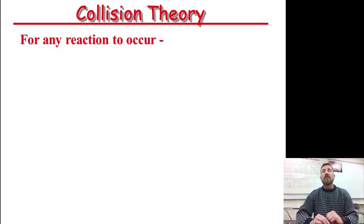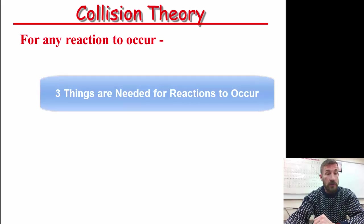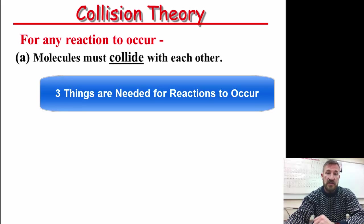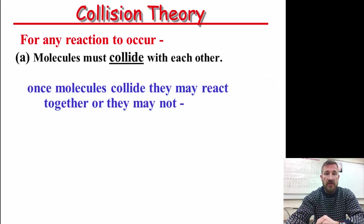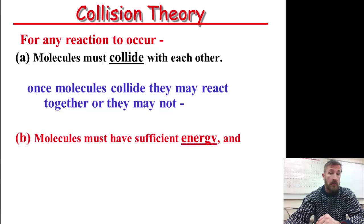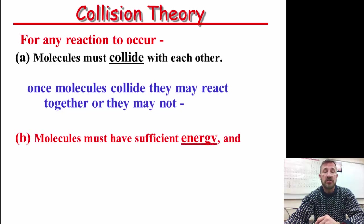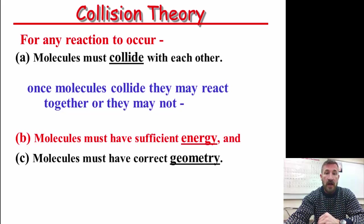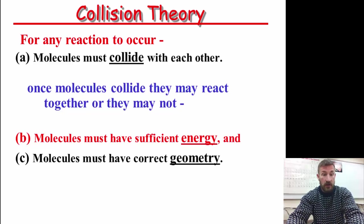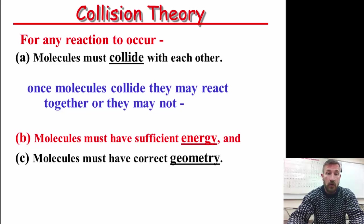So let's look at the collision theory. In order for any reaction to occur, you must have two things. Reactions must collide with each other, so they have to hit. When they do that, they may react together or they may not. Molecules must have sufficient energy, so they must collide and they must have enough energy. And also they must have the correct geometry. So in order for a reaction to occur, we have three things here. That reactions molecules must collide, they must have enough energy, and they must have the correct geometry.